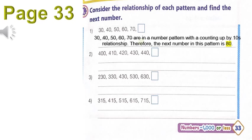Page 33, number one: consider the relationship of each pattern and find the next number. For example, number one: 30, 40, 50, 60, and 70. Please write in sentence: these numbers are in a number pattern with a counting up by tens relationship. The pattern is 30, 40, 50, 60, 70, and 80.